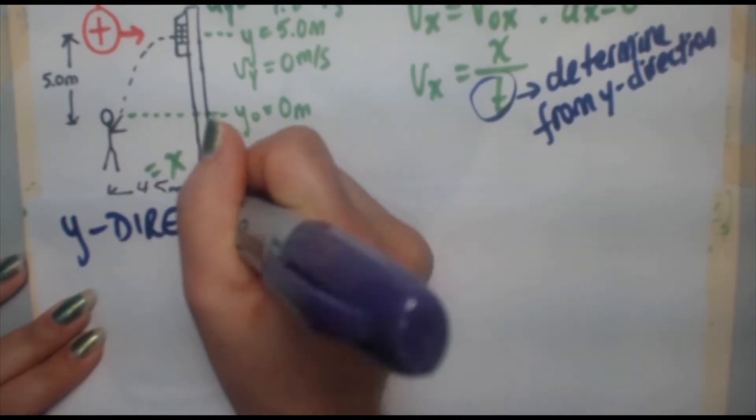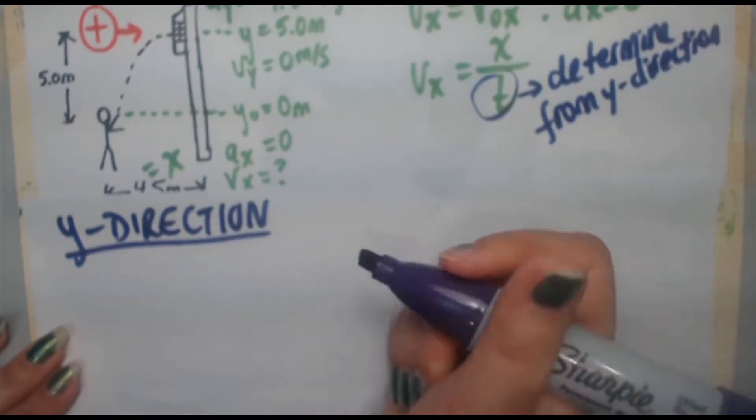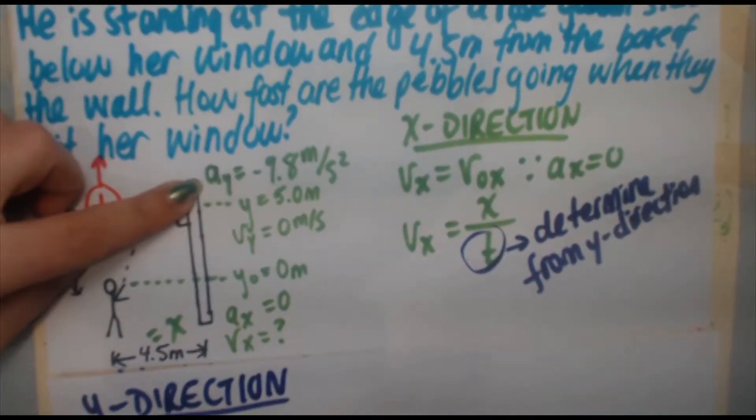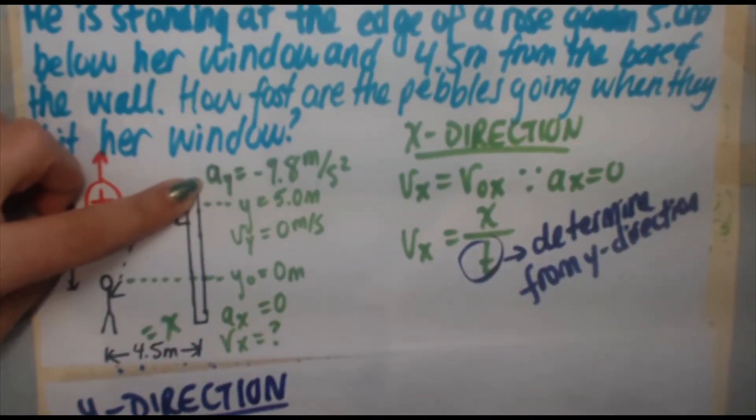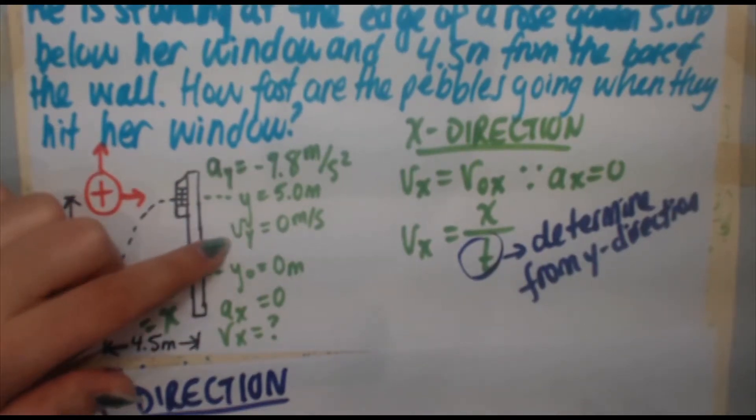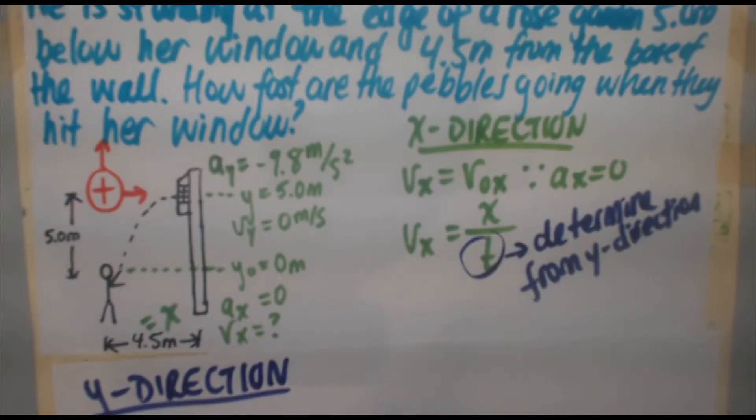Let's get a new heading here going y direction. Let's look back to what we're given in the problem. We're given acceleration in the y direction, or we know it. We know our final y. We know our initial y. We know our final y speed. So why don't we go ahead and find the initial y speed right here where it starts off. That's going to help us.